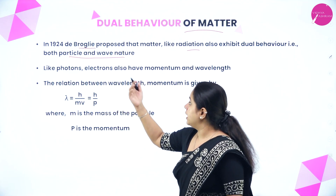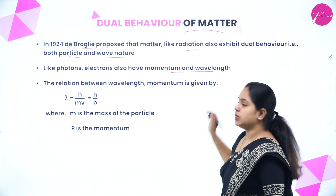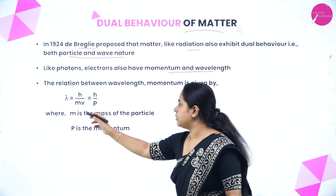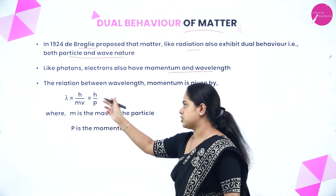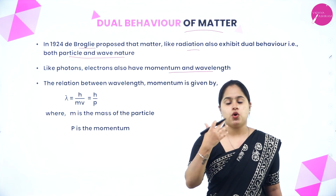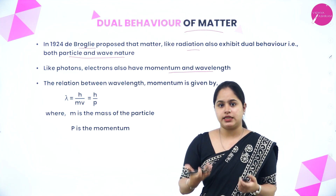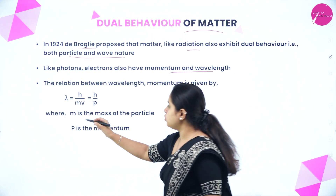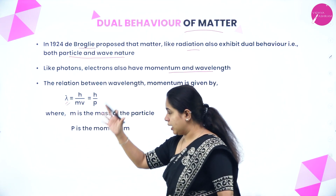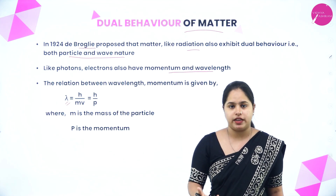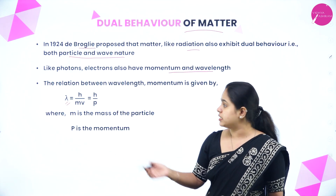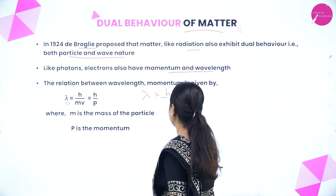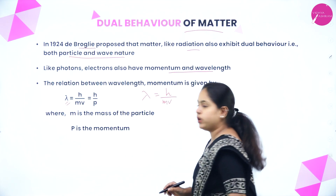Like photons, electrons also have momentum and wavelength. The relation between wavelength and momentum is given by lambda equals h divided by mv, which also equals h divided by p. This is called de Broglie's wavelength equation, formulated from his experiments on the dual behavior of matter.